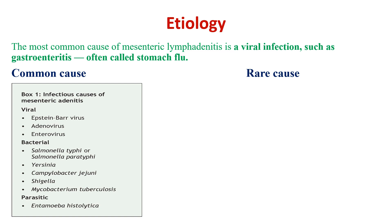From bacteria, the most common etiologies are Yersinia, followed by Campylobacter jejuni and Salmonella. Parasitic etiologies, such as Entamoeba histolytica, can also cause mesenteric lymphadenitis.